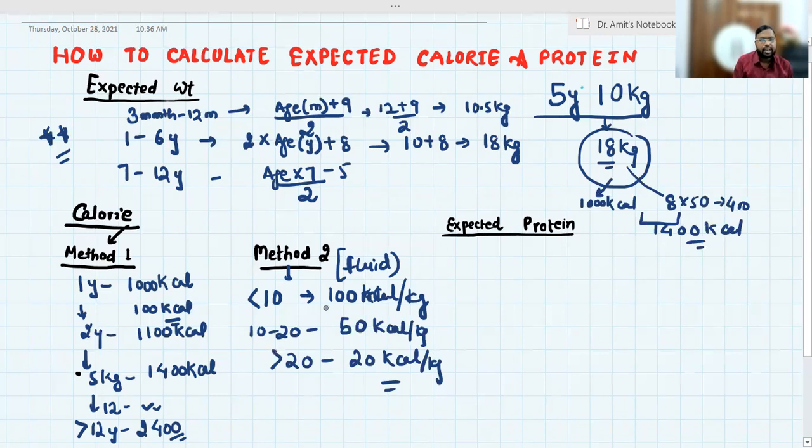So we get 1400 by both these methods. This child requires 1400 kilocalorie, not 1000 kilocalorie as per weight. The expected weight, you have to give calorie. Now you have to know what would be the expected protein for this child. If this is a rough estimation, you have to follow the ICMR guideline.